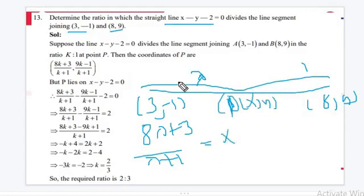So this is x. Similarly, if you find the value of y, we can write 9 lambda minus 1 divided by lambda plus 1, and this is y. So this value we will put in this equation.